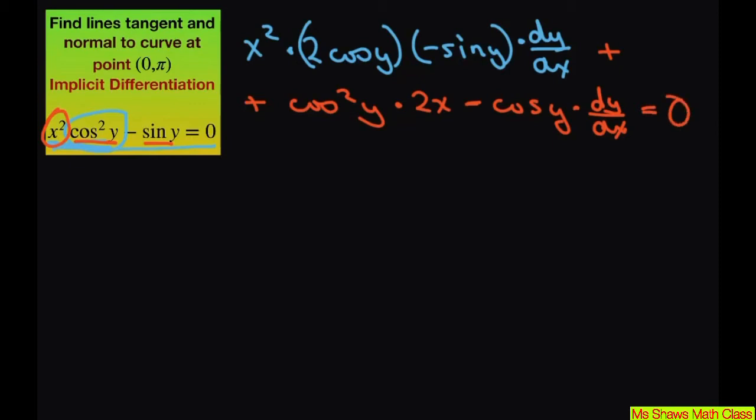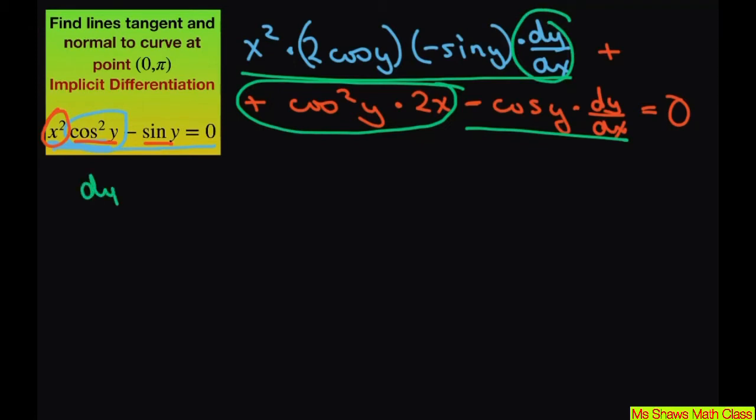Now let's group these two together and I'm going to move this over to the right-hand side of the equation. So basically, I'm going to factor out dy/dx and if I do that, I get dy/dx equals...